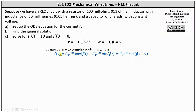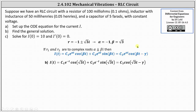The general solution is I(t) equals c₁ e^(αt) cos(βt) plus c₂ e^(αt) sin(βt), which can also be expressed as c₃ e^(αt) cos(βt minus γ). Performing substitution for alpha and beta, the general solution can be expressed as a sum or combined as c₃ e^(−t) cos(√3·t minus γ).